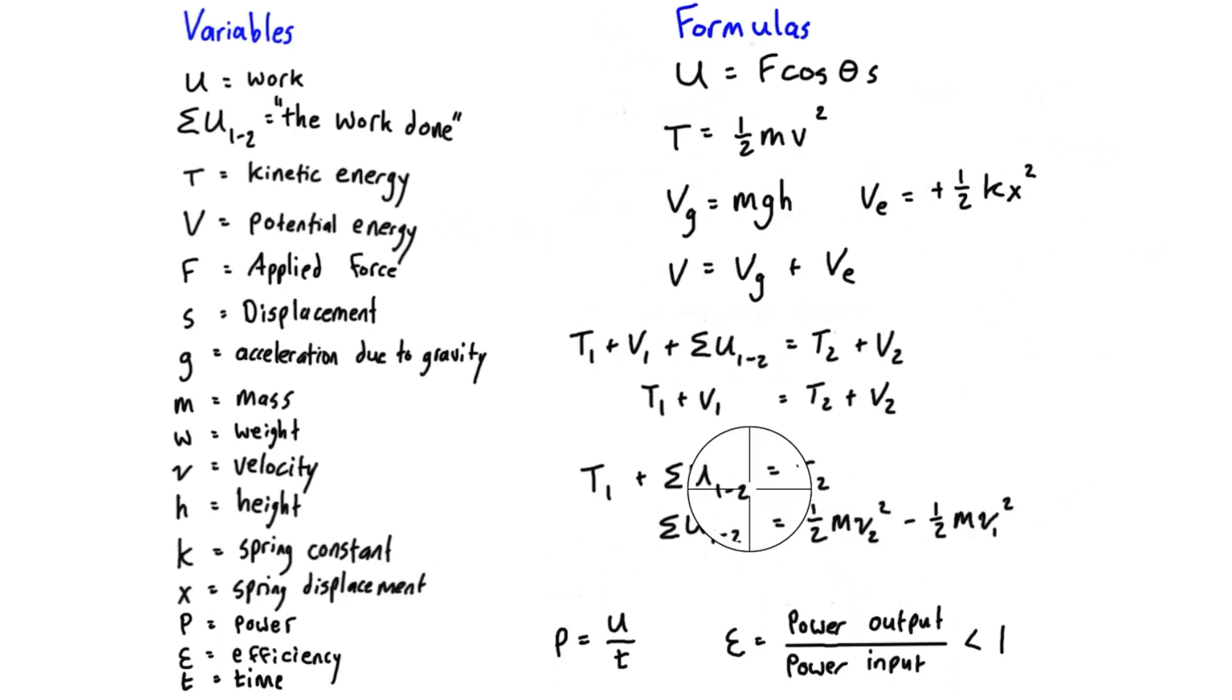All of the terms up here have all been in units of joules - they're all relating to work and energy. Down here we have power. Power is just equal to work over time, so it's going to be joules per second. Joules per second is also watts - that's the unit of power. Power is just the time rate of doing work.